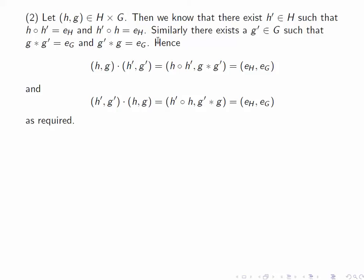And again, we multiply (h,g) on the right by this element and verify that we get by the definition of the operation in the Cartesian product, h circle h prime, g star g prime, and that's equal to (E_H, E_G), which is the identity element of our group.